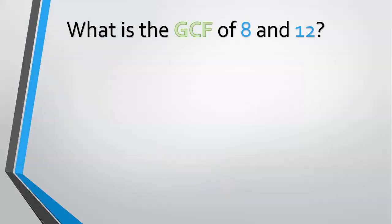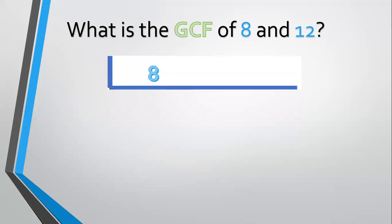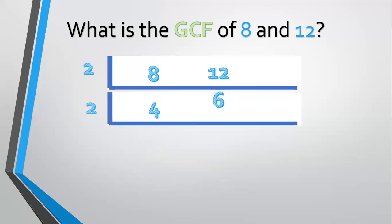Another example — how about 8 and 12? List them: 8 and 12. What common factor can divide them? Start with 2. 8 divided by 2 equals 4. 12 divided by 2 equals 6. So 4 and 6 have a common factor of 2. 4 divided by 2 equals 2. 6 divided by 2 equals 3. Now 2 and 3 have no more common factor, so we multiply: 2 times 2 equals 4. The GCF of 8 and 12 is 4.